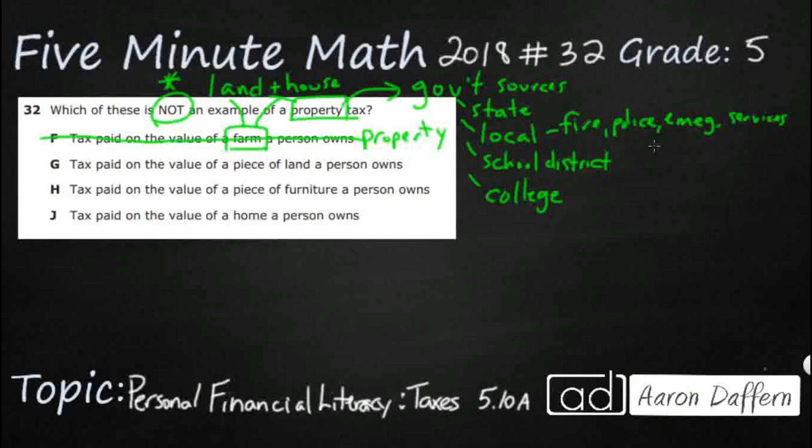G, tax paid on the value of a piece of land. Well, that's exactly what we just said. It could just be a piece of land. Maybe they're hunting, maybe they own the land and they're going to build a house on it later, but they just kind of bought it in two different chunks. We don't know, but for whatever reason, they have land just sitting by itself. It is property, and it is going to be taxed with a property tax.